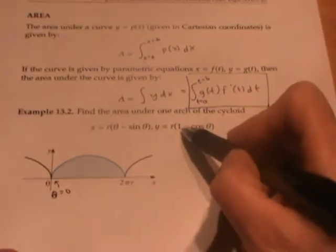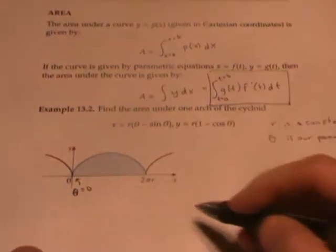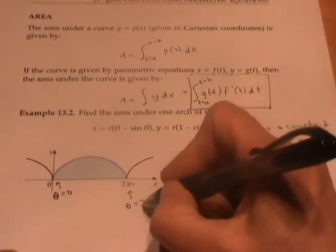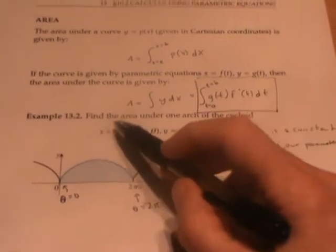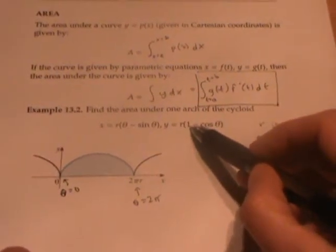Plugging in theta equals zero gives us the x, y coordinates zero, zero. And we want to keep going until theta equals two pi. Plugging in two pi here gives us an x value of two pi r and a y value of zero.